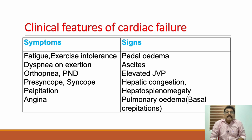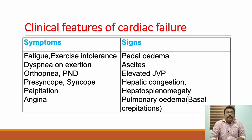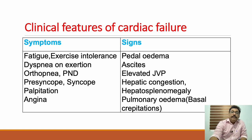Signs include pedal edema, ascites, elevated JVP, hepatic congestion, hepatosplenomegaly, and bilateral basal crepitations. When we auscultate the lungs, bilateral crepitations may be a finding of pulmonary edema, though they can also occur in pneumonia, ILD, or in elderly patients without specific cause. If a patient has suspected cardiac failure and bilateral crepitations, it is due to pulmonary edema.